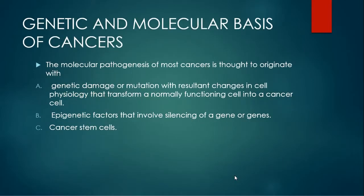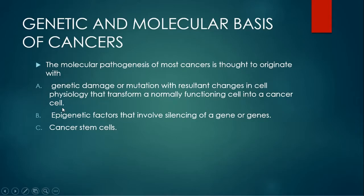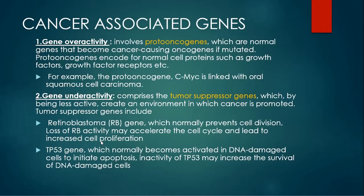Regarding the genetic and molecular basis of cancers, there are three pathogenesis mechanisms. First is genetic damage or mutations in genes, which result in changes in cell physiology that transform a normally functioning cell into a cancer cell. Second are epigenetic factors that involve silencing of a gene or genes. Third are cancer stem cells. Considering genetic properties first, cancer-associated genes can be divided into two categories: genes with overactivity and genes with underactivity.